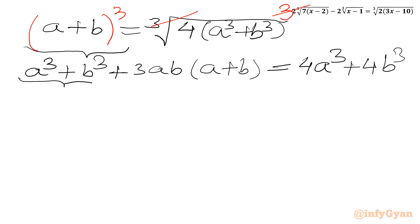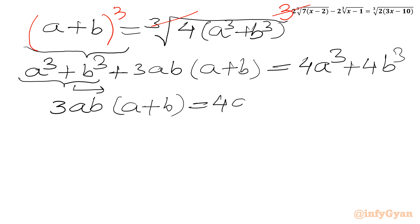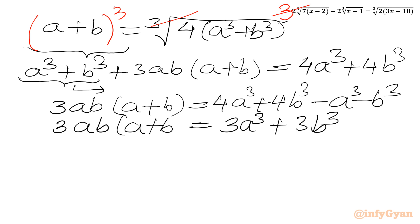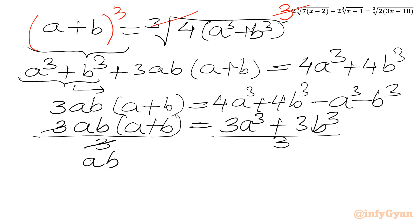Now I will cube both sides. On the RHS, the cube root cancels. On the LHS, we apply the (a plus b) whole cubed formula: a cubed plus b cubed plus 3ab(a plus b) equals 4a cubed plus 4b cubed. Taking those two terms to the RHS: 3ab(a plus b) equals 3a cubed plus 3b cubed. Dividing both sides by 3: ab(a plus b) equals a cubed plus b cubed.